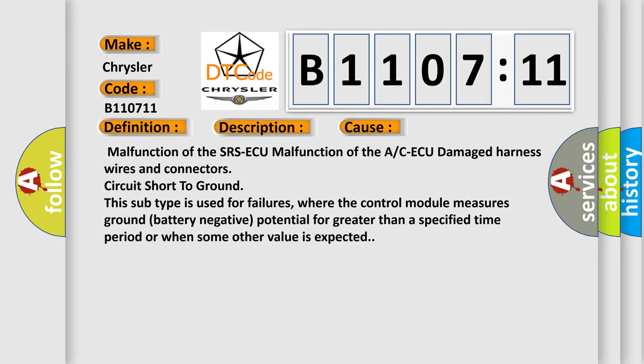This subtype is used for failures where the control module measures ground battery negative potential for greater than a specified time period or when some other value is expected.